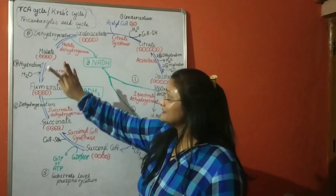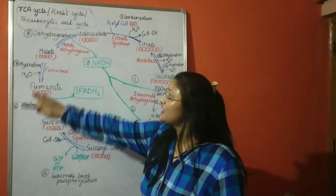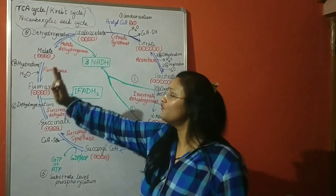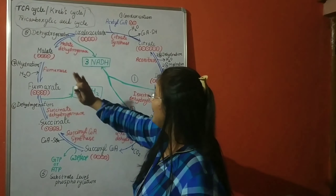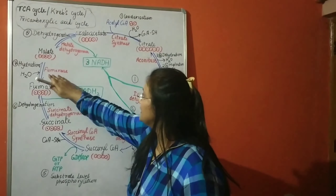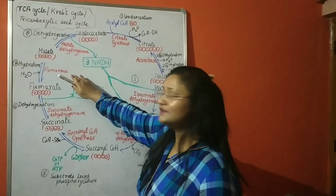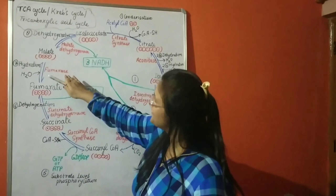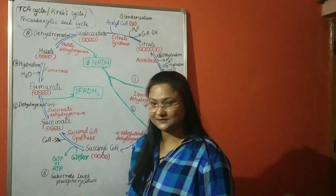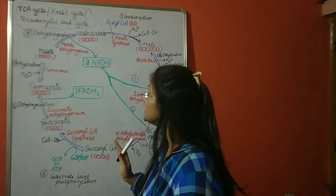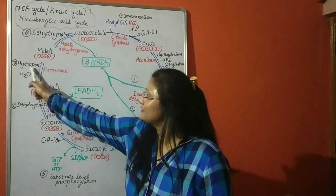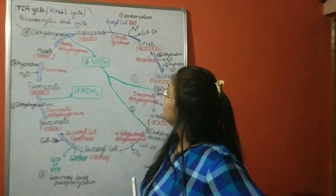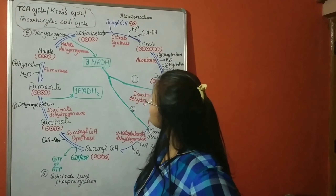The seventh step is hydration — addition of water. Fumarate is converted into malate, catalyzed by the enzyme fumarase. Water is added to fumarate to produce malate.